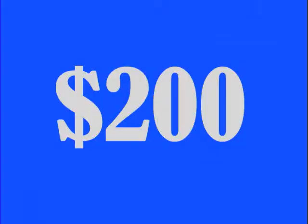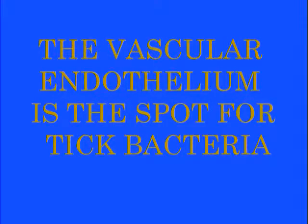Pathogenesis 200, please. The clue: the vascular endothelium is the spot for tick bacteria. Taylor answers: what structure separates the blood from the connective tissue? That's incorrect. What we were looking for was where does Rickettsia rickettsii specifically replicate in the body.